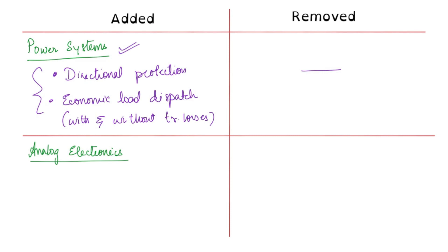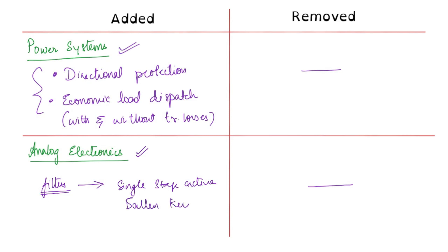Next, we will discuss analog electronics. Here also no topics have been removed. One topic — filters — has been more elaborately specified. Previously it was only mentioned as simple active filters, but now it has been given in more detail: single stage active filters, Sallen-Key filter, and Butterworth filter have been specifically mentioned. Filters were present before; now they have been more elaborately defined.